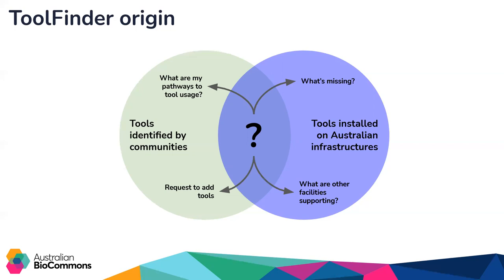If we did have such a mechanism, then both the community and our infrastructure partners could begin leveraging this information to the benefit of everyone. The community could start asking questions like: what are my pathways to tool usage? What tools would I like to request that I can clearly see are missing? And in the same way the infrastructure could ask: what's missing, what are other facilities supporting?